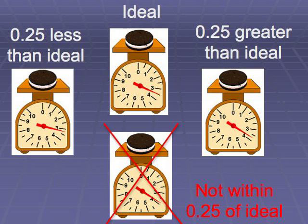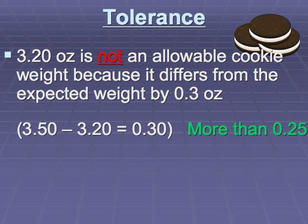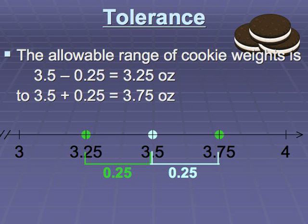I guess we'd have to eat that one — it's a reject. A cookie that weighs 3 and 53 hundredths ounces is okay; it's within the tolerance level. But a cookie that only weighs 3 and 20 hundredths ounces isn't alright. We could determine the allowable range of cookie weights by fixing 3 and 5 tenths as the ideal and going 25 hundredths below and 25 hundredths above that ideal weight.